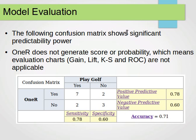Outlook does show significant predictability power — an accuracy of 71%, which isn't bad. However, 1R does not generate a score or probability, which is why we don't have gains charts, lift charts, KS charts, or ROC charts like those explained in our model evaluation tutorial.